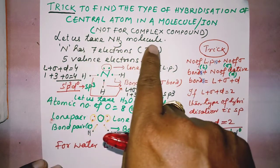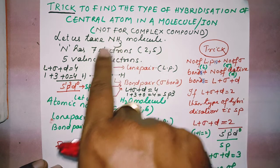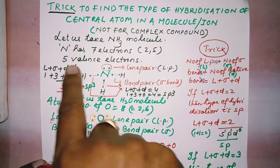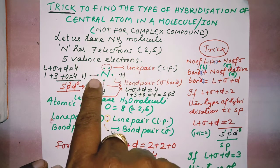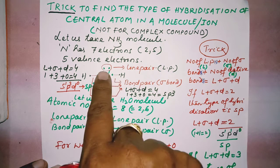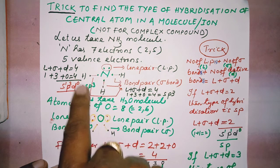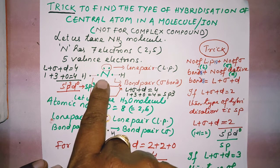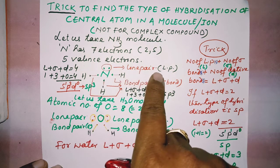Let us take the ammonia molecule. In ammonia, N is the central atom. N has 7 electrons with configuration 2,5, so there are 5 valence electrons. 3 hydrogen atoms form 3 sigma bonds with this nitrogen atom, and the remaining 2 electrons stay as a lone pair.